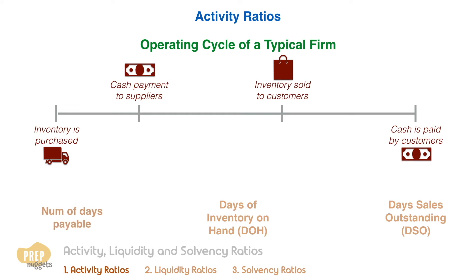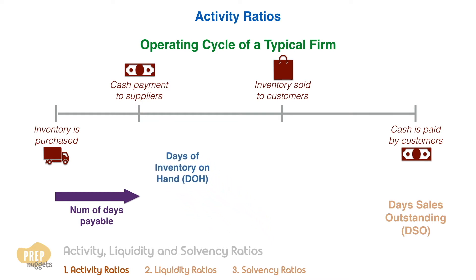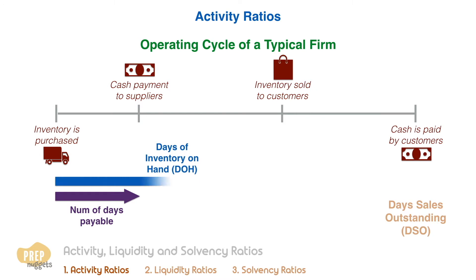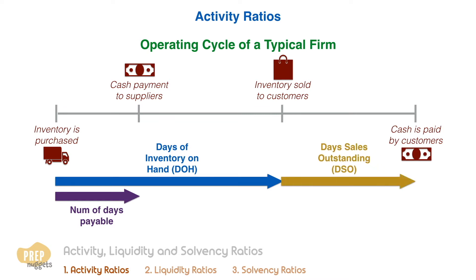The number of days payables is the average number of days the firm takes to pay its suppliers for the inventory purchased. The days of inventory on hand represents the average number of days the inventory sits on the shelf before being sold. And the number of days sales outstanding represents the average number of days customers take to pay after receiving the goods.